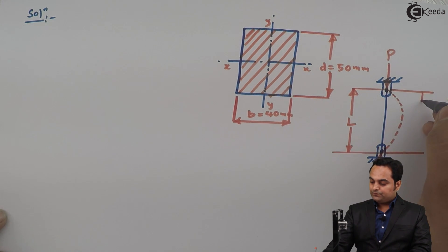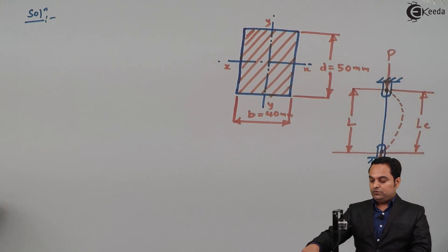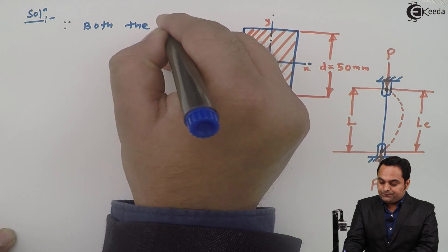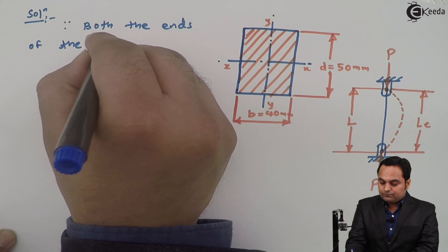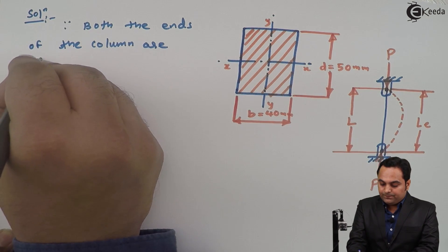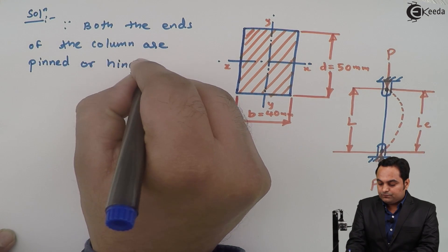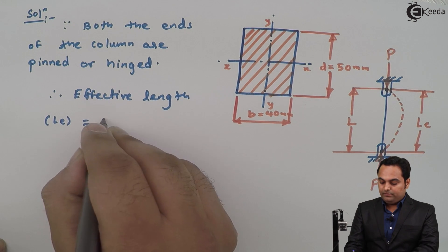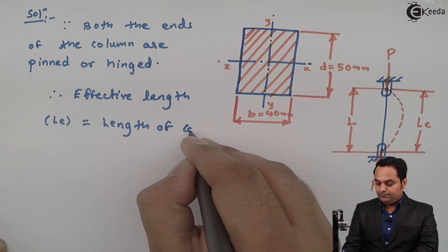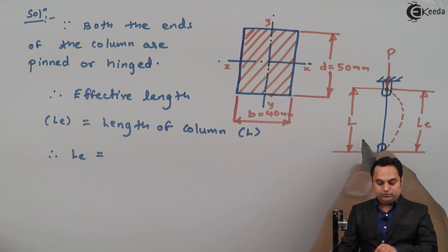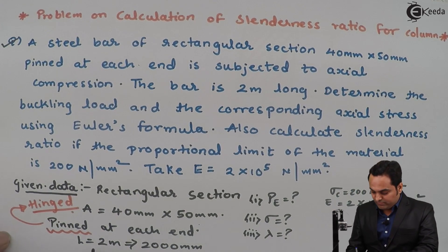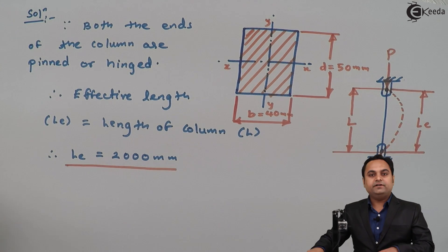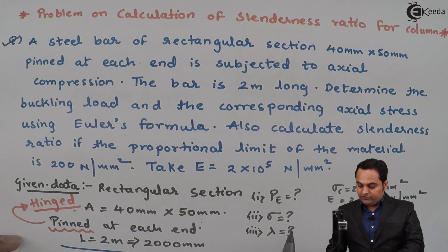Since the total length takes part in the bending, this length is called the effective length. Since both ends of the column are pinned or hinged, the effective length L_e is equal to the total length of the column, which is 2000mm.